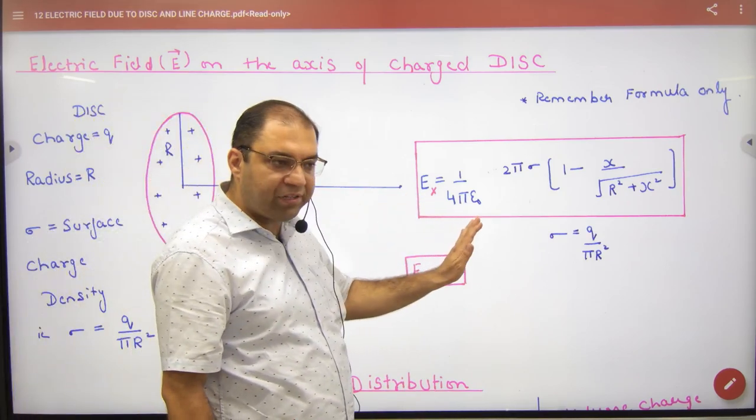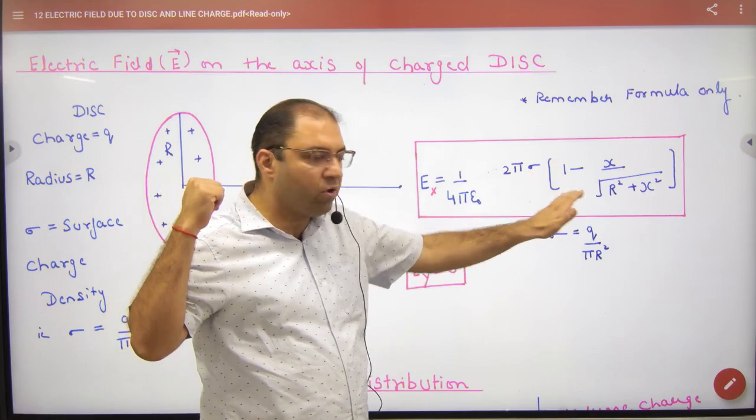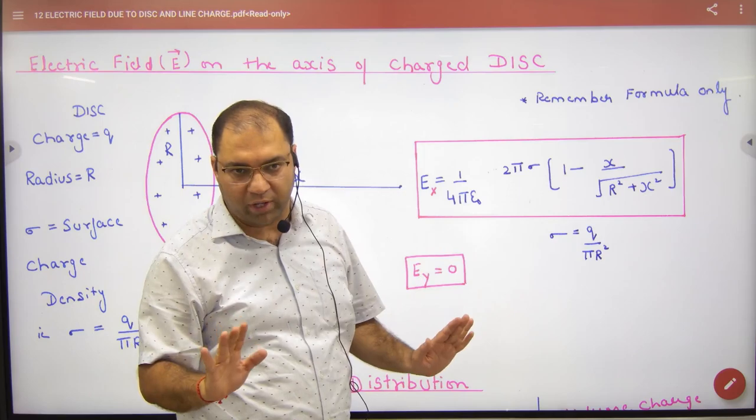And what will happen? 1 by 4 pi epsilon 0, 2 pi sigma - sigma, I have told you, charge by area - 1 minus x upon under root of r square plus x square.